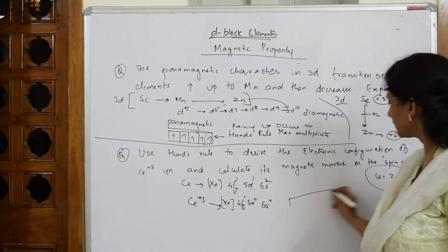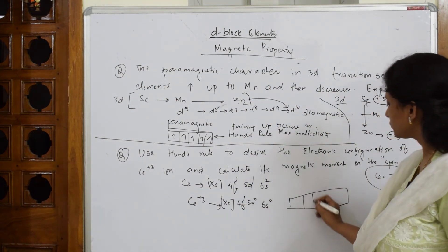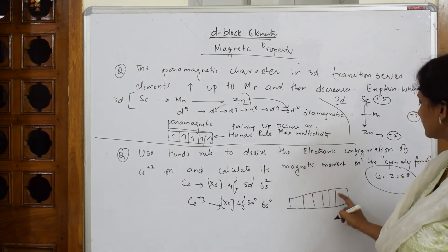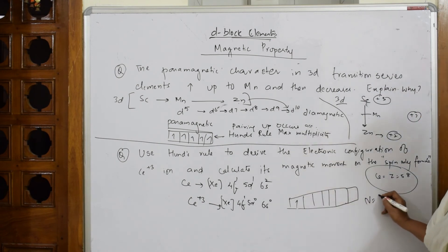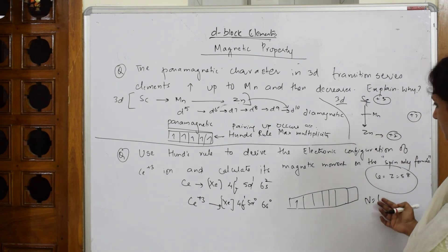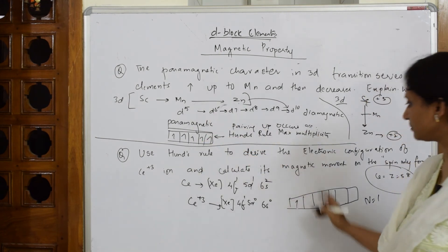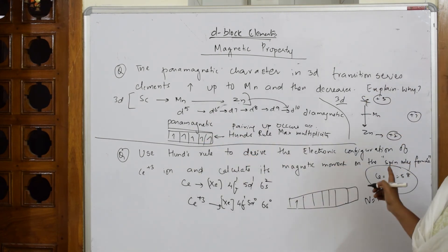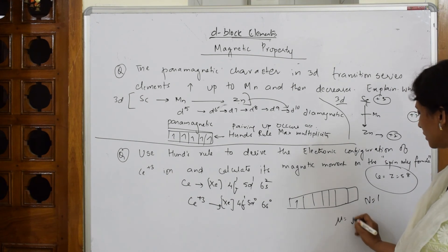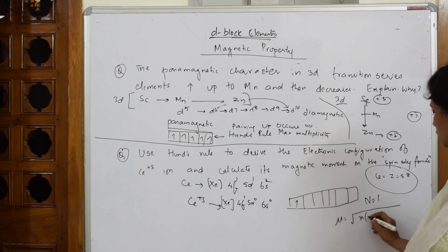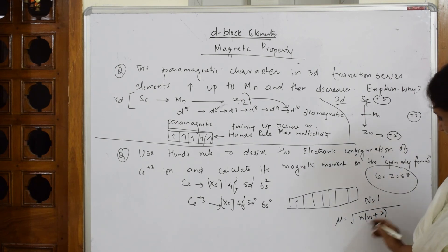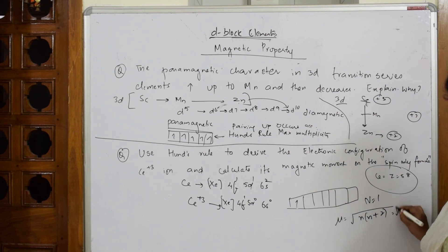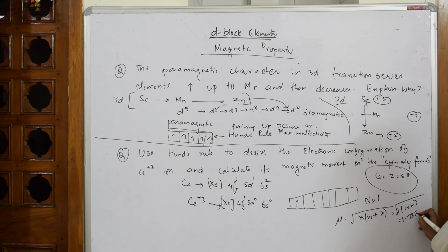In the 4f subshell, there is only one unpaired electron. The f subshell can hold up to seven electrons with all unpaired, but here we only have one. So n = 1. Applying the spin-only formula: μ = √(n(n+2)), we substitute n = 1 to get μ = √(1 × 3).